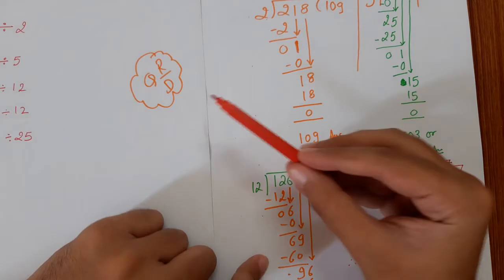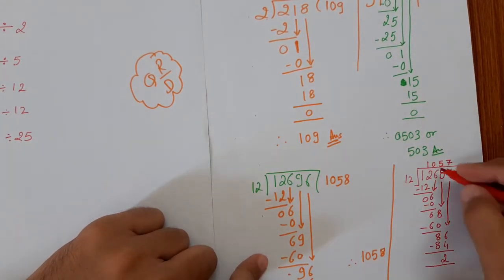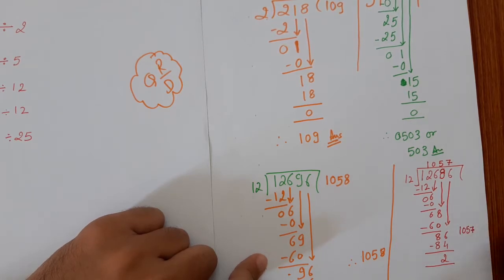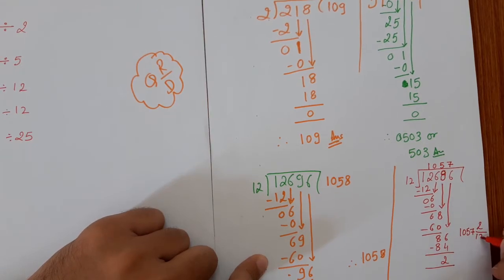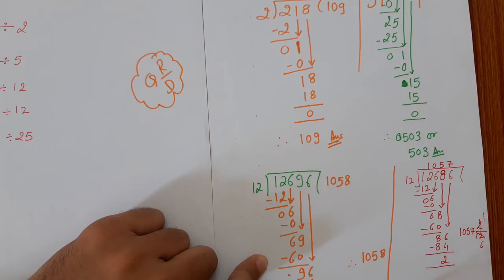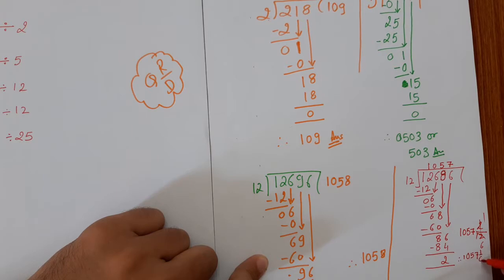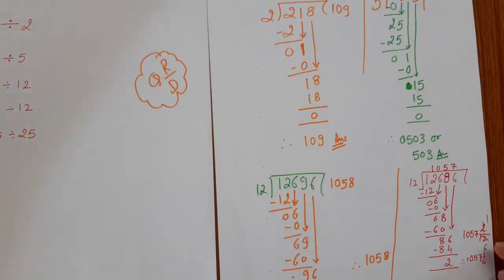We got the remainder 2. So what to do when we have the remainder? We should use QRE. Quotient is 1057, and remainder is 2, and divisor is 12. So this and this can be reduced. 2 times 1 is 2, and 2 times 6 is 12. So the answer is 1057 and 1 by 6. Let's take one more example.